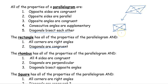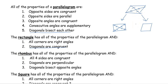The rhombus is also a parallelogram. All rhombi are parallelograms, but not all parallelograms are rhombi. The rhombus has all five properties from the parallelogram, but in addition to those we have four congruent sides.